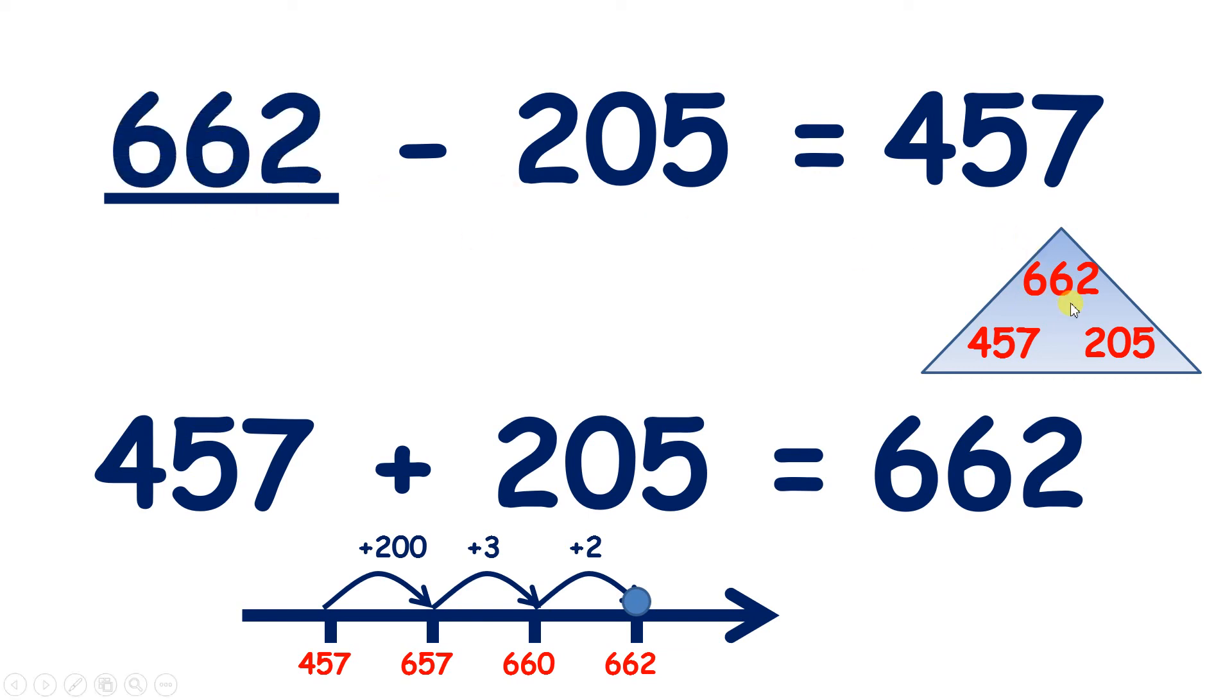which means that 662 minus 205 equals 457.